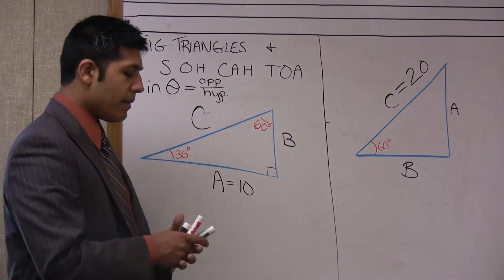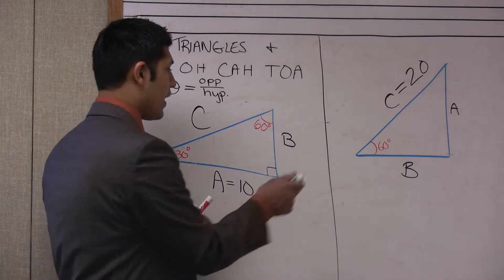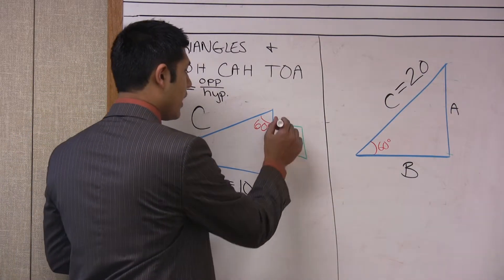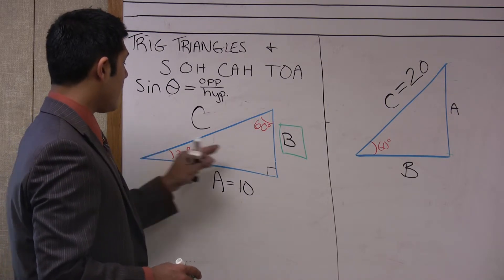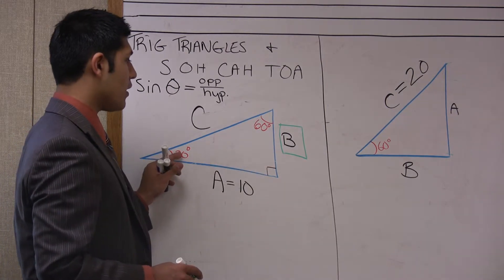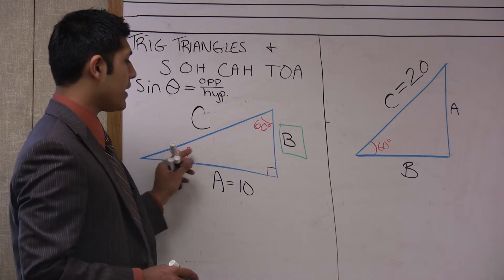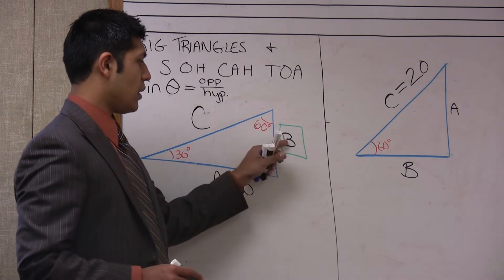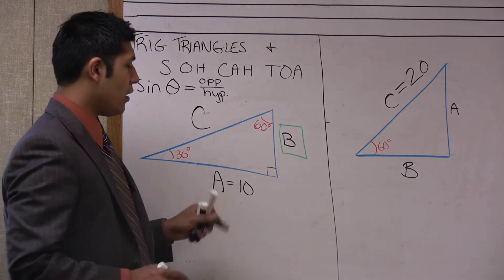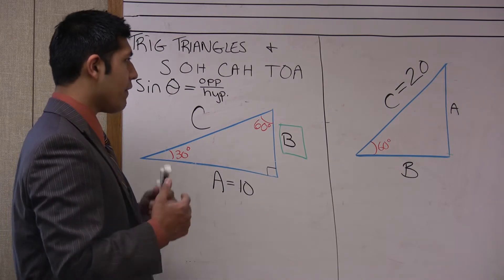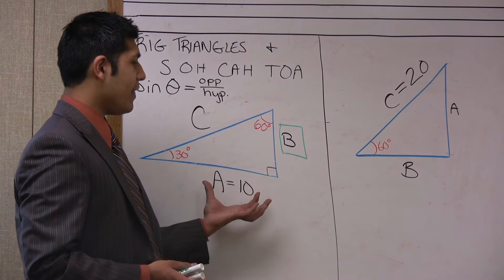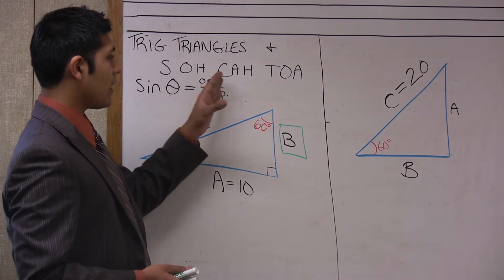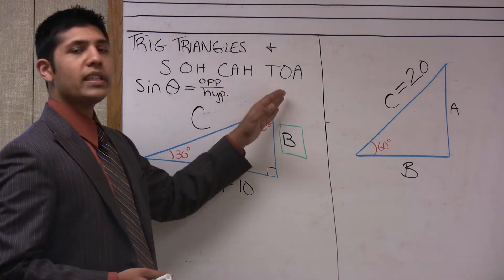Maybe I might be solving for the value of B. So what is the relationship between B and the 30 degree angle? Well that relationship is opposite. Therefore I want to use a function that is utilizing both the opposite and the adjacent. As I look at my trig functions, I see that only tangent satisfies our requirements here.